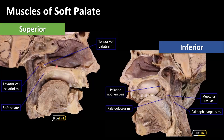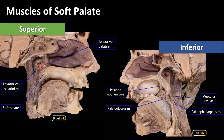This is why when you get on an airplane and your ears start feeling stuffy, you can chew gum or do the funny face thing and go to try to pop your ears open. What you're doing is activating these muscles and pulling that inferior part of the pharyngotympanic tube down to make it open into your nasopharynx.